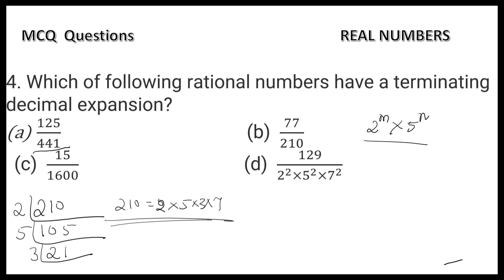Let us check if 15/1600 is the answer. Factorizing 1600 by successive division: 2, 2, 2, 2, 2, 2, then 5, 5.